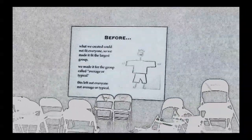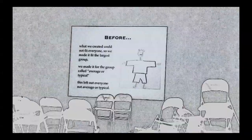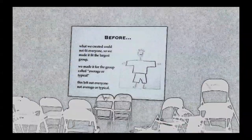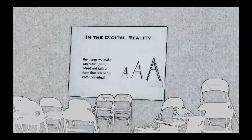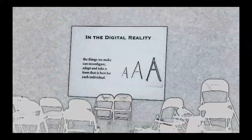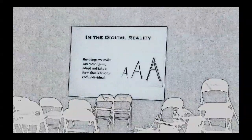Before, what we created could not fit everyone, so we made it fit the largest group. We made it for the group called average or typical. This left out everyone not average or typical. In the digital reality, the things we make reconfigure, adapt, and take a form that is best for each individual.